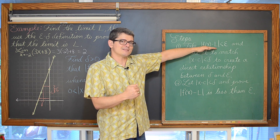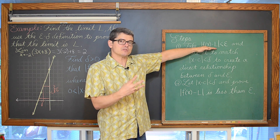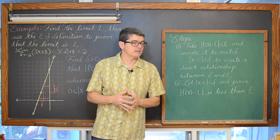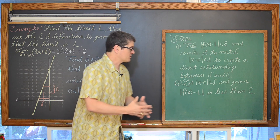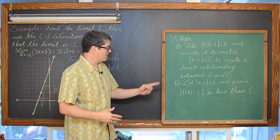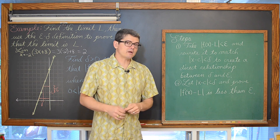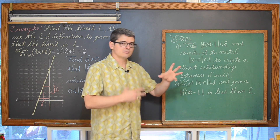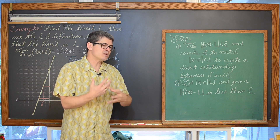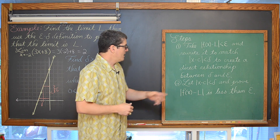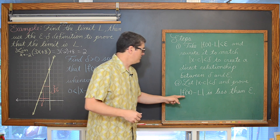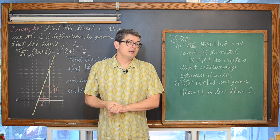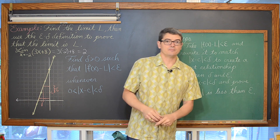You have to know that step one is not part of the proof — it is scratch work just to develop this relationship between delta and epsilon. Then we actually start the proof by saying we are going to let |x - c| be less than that delta we get, sort of like an educated guess from step one, and prove that |f(x) - L| < epsilon.